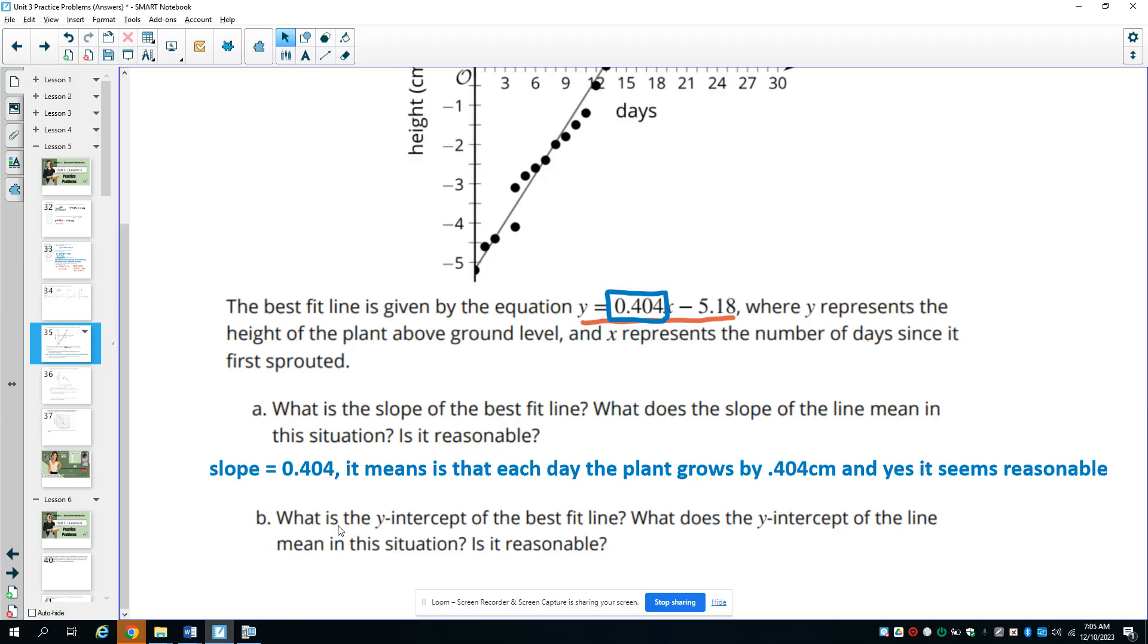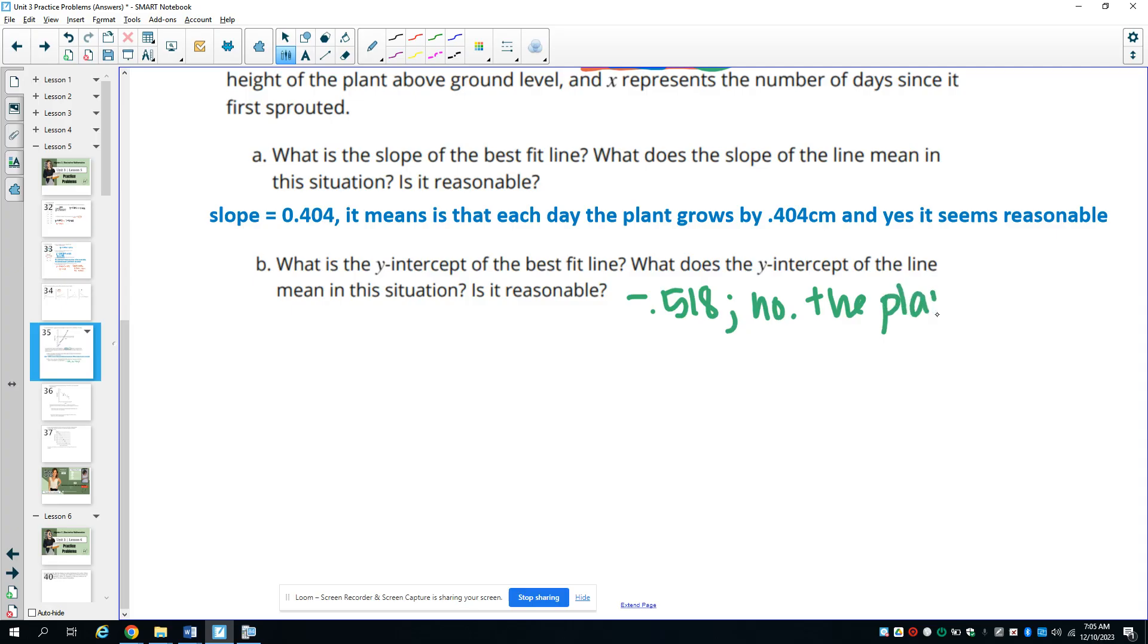All right. And then what is the y-intercept for the line of best fit and does that make sense? And so the y-intercept is the constant number. So here's our y-intercept. So our y-intercept is negative 0.518. And does this make sense? No. The plant can't be negative feet, right? Or centimeters. So it would represent, you know, kind of almost before it sprouted, but it doesn't make sense in this context. You can't have a negative height.